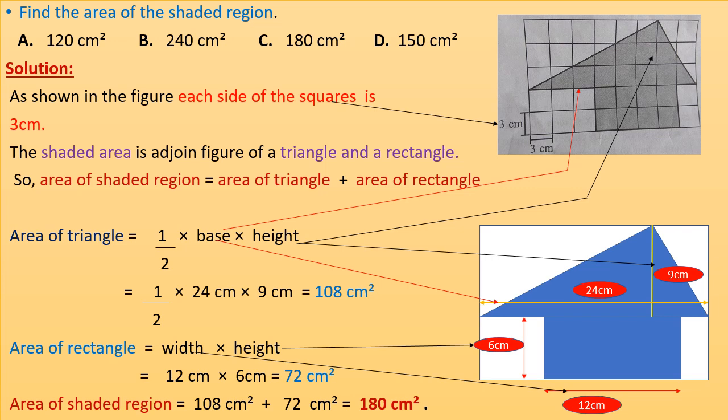Each side of the square is 3 centimeters, so all the squares in the figure will be of side 3 centimeters. The shaded area is an adjoined figure of a triangle and a rectangle. So area of shaded region equals area of triangle plus area of rectangle.